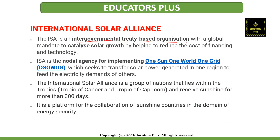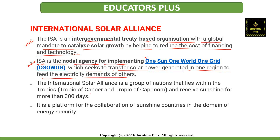Now let's start with the topic — the International Solar Alliance. The International Solar Alliance is an intergovernmental treaty-based organization with a global mandate to catalyze solar growth by helping to reduce the cost of financing and technology. ISA is the nodal agency for implementing the One Sun, One World, One Grid scheme, which seeks to transfer solar power generated in one region to feed the electricity demands of another region.